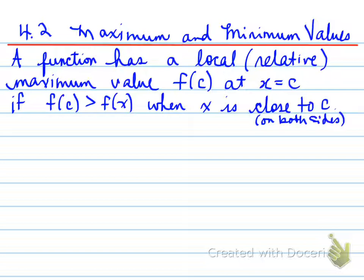What you're looking at here is, for example, when you see a point where you have a maximum, and let's say that point is c — this point here is c — on either side, whether on the left side or the right side, those y values are actually lower than the y value at point c.